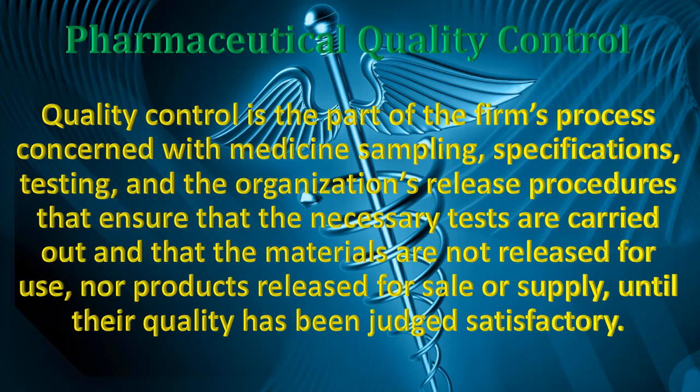Quality control में जो भी material होता है उसकी testing quality control unit करता है। Specifications के base पर testing होती है — raw material, finished product और intermediate materials की testing होती है। उन testing के base पर जो results मिलते हैं, उन results के base पर उस particular material को release किया जाता है। ये सब quality control unit की responsibilities होती हैं।